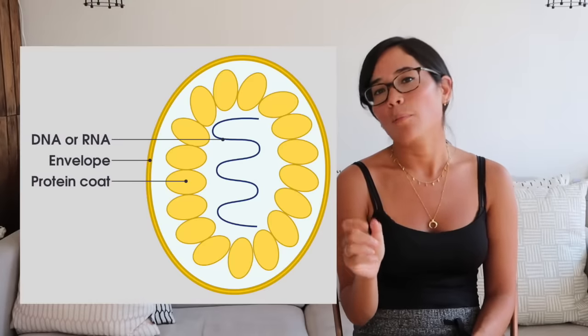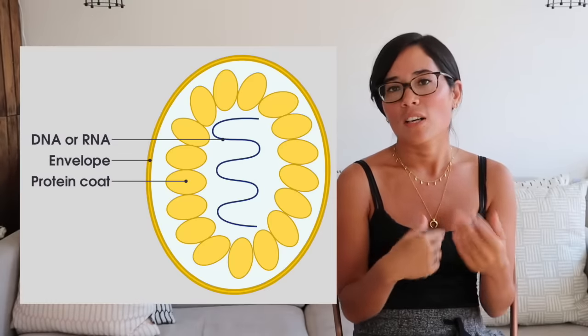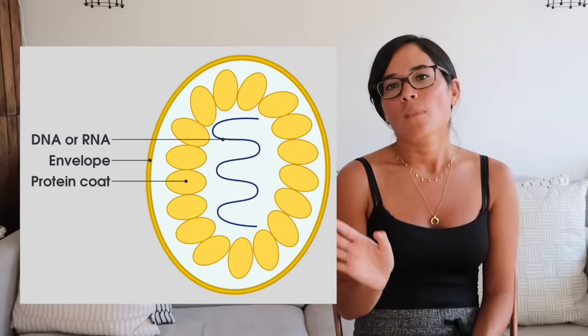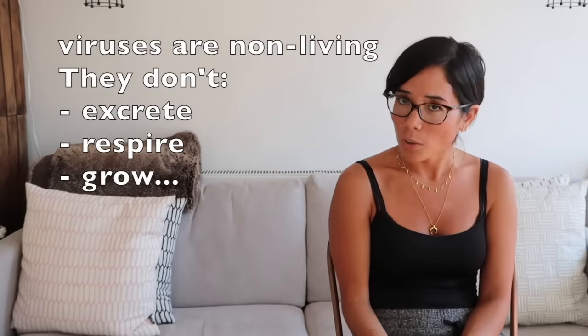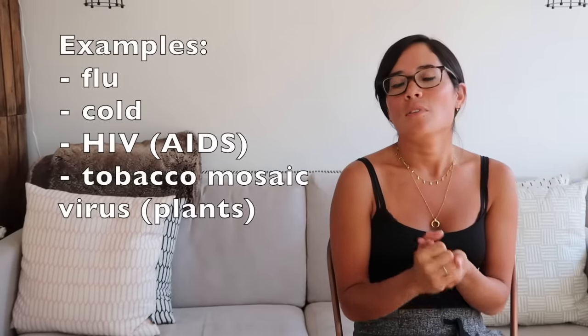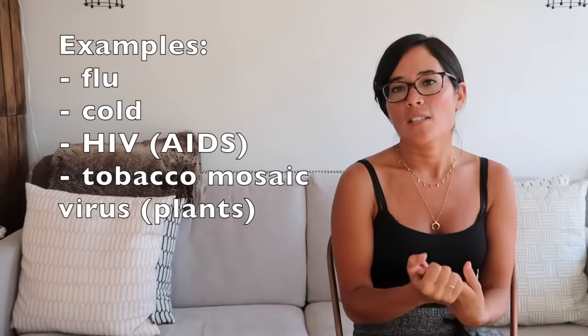Looking at viruses: they are much smaller than bacteria and simply made of a protein coat surrounding either DNA or RNA. They don't have any typical organelles. Crucially, they are non-living — they do not excrete, respire, or grow. They are always pathogenic. Examples include the flu virus, cold virus, HIV which causes AIDS, and Tobacco Mosaic Virus, which causes discolouration in plant leaves by preventing chloroplast formation.